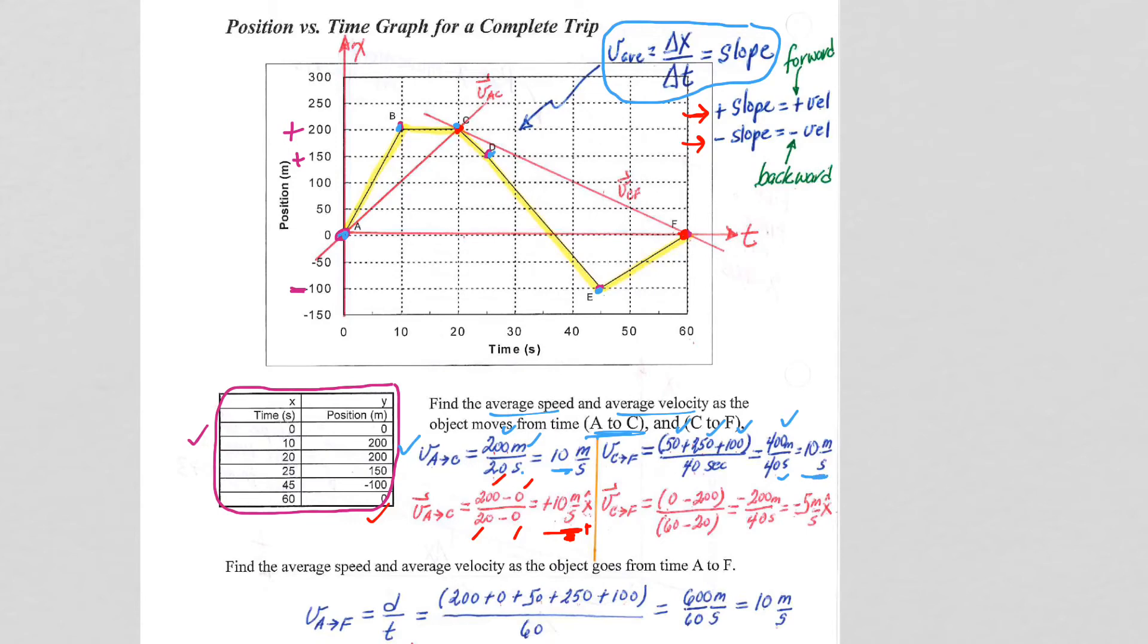Average velocity, right, slope of the secant line, final, position 0, X final, minus X initial. X initial was positive 200, so minus 200, so negative 200 over 40 seconds. So my average velocity from C to F was negative 5 meters per second.